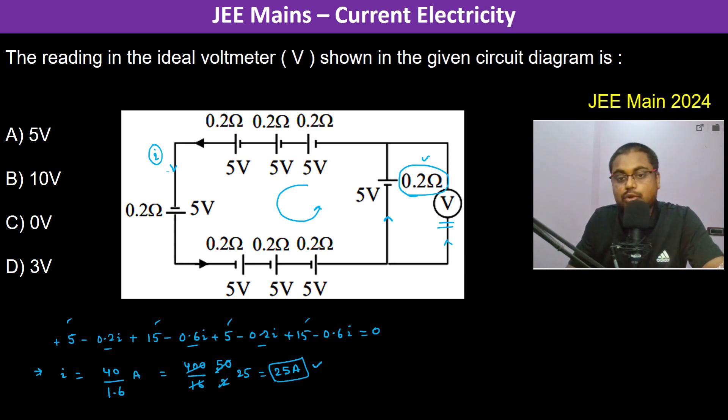So therefore minus 0.2 ohm into 25 ampere plus 5 volts. So this becomes 5 volts minus 5 volts which is 0, because this is minus 5. So therefore the answer is C.